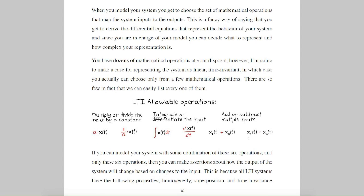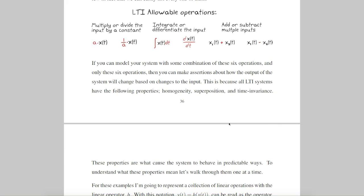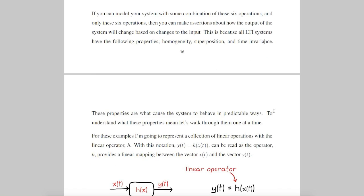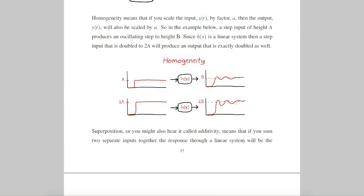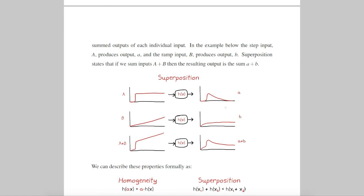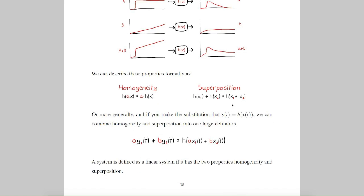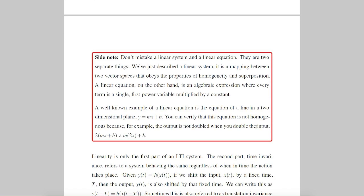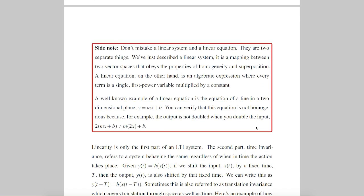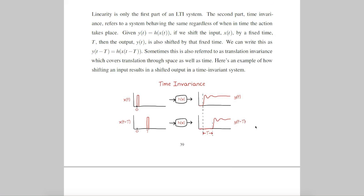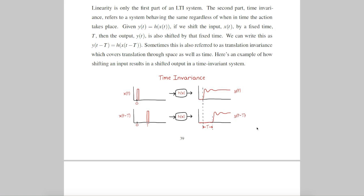But if you can model your system with some combination of these six operations, then you can make predictions about how the output of your system will change as you change the input. That's because LTI systems obey homogeneity, superposition, and time-invariance. Homogeneity is the scaling principle: if you scale the input by two, then the output will also scale by two. Superposition is the adding principle: if you add two different inputs together, then the output is the summed output of each individual input. And finally, time-invariance is the shifting principle: if you delay your input by time t, then the output will also be delayed by time t.